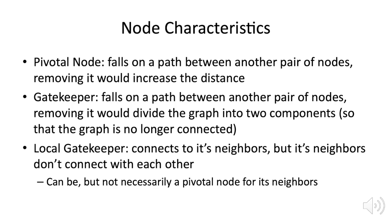A gatekeeper is the extreme type of pivotal node — removing it means some nodes can no longer be connected, making the graph no longer connected. It's not necessarily removing the gatekeeper itself, but removing one of the edges between the gatekeeper and other nodes. A local gatekeeper is sort of the junior version of a pivotal node. A local gatekeeper connects to its neighbors, but its neighbors don't connect directly with each other. However, it's possible that a local gatekeeper is not a pivotal node — if you remove an edge to it, you can still reach the other node at the same distance.